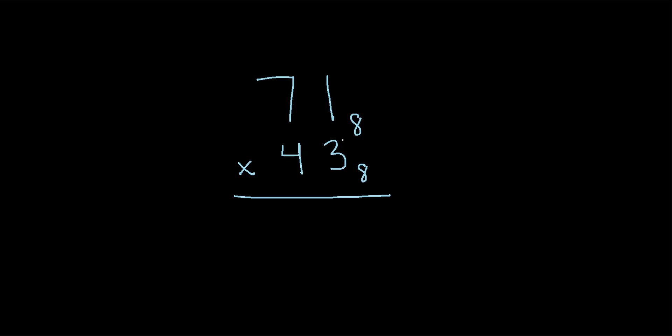We'll start with the 3, and we'll say: what is 3 times 1? That's just 3. What is 3 times 7? That's 21.